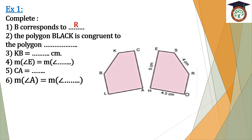We need to find the name of the second polygon in the order of the name of the first polygon, which is BLACK. So it will be ROHES. R, O, H, E, S.